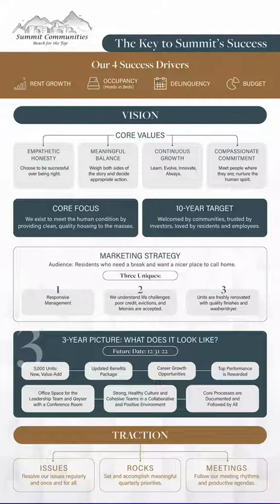On one single image it gives the entire team everything they need to know when it comes to our values, our goals, what's most important towards driving our company into more success, and just a really good North Star for our company to look at every day and keep everybody going in the right direction. It's called the VTO, which stands for Vision Traction Organizer — it's an integral piece of this EOS system that we run on.